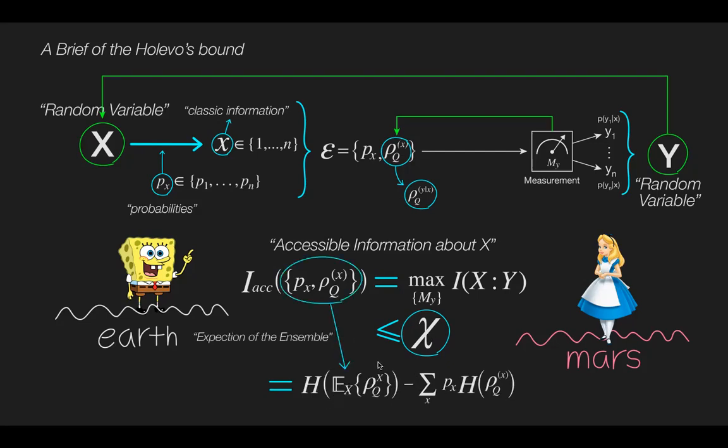First entropy is the entropy of the expected density operator of the ensemble, and minus on average of all entropies of included quantum state. We can simplify the expectation of the ensemble to rho sub q.